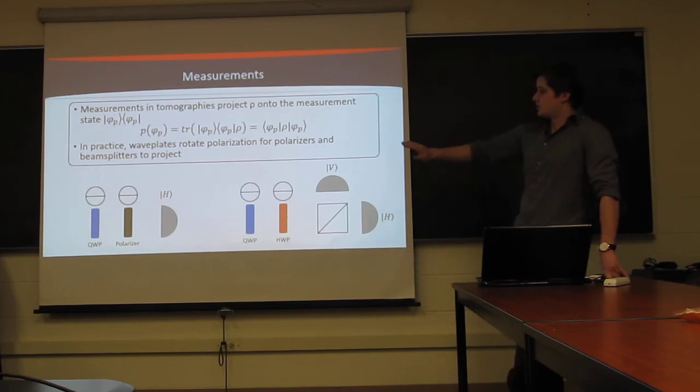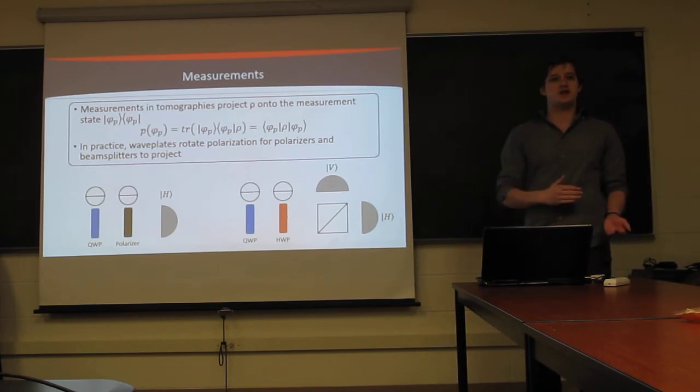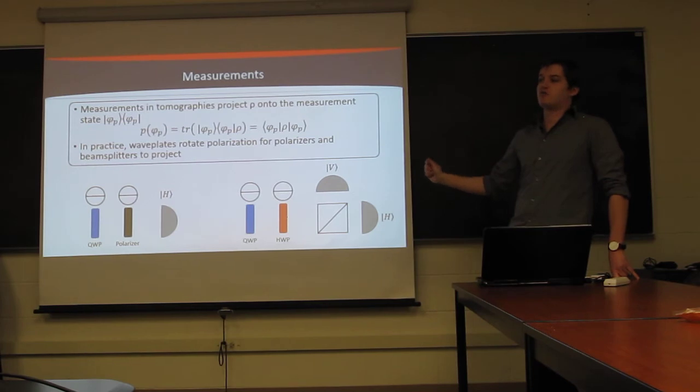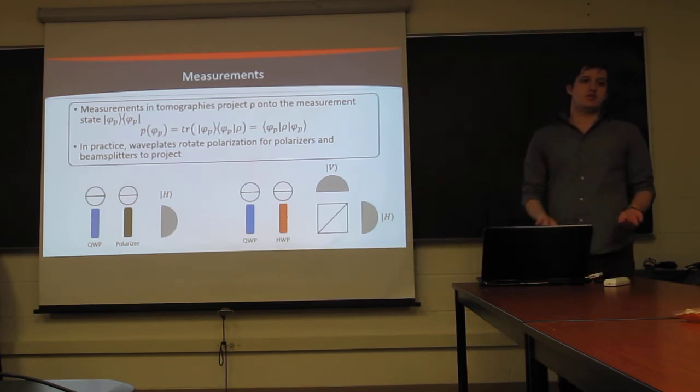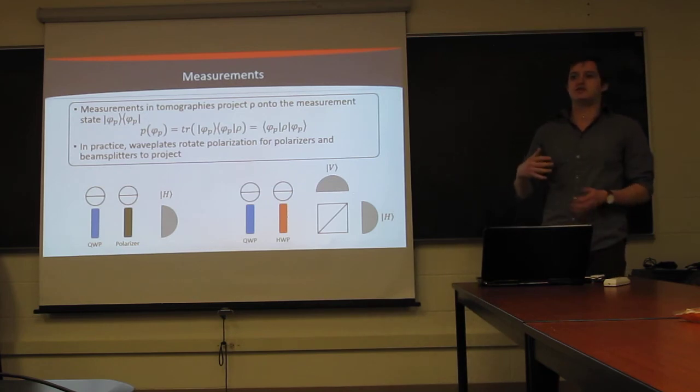In practice, there are two methodologies to go about this. You can either use a quarter wave plate and a polarizer, in which case the quarter wave plate allows you to rotate any polarization state onto a linear polarization state, and then the polarizer projects onto the desired linear polarization state. Or, you can alternatively use a quarter wave plate, half wave plate, and polarizing beam splitter. This accomplishes a similar goal, in which the quarter wave plate and half wave plate are used to rotate your desired state onto horizontal, and then the polarizing beam splitter transmits the desired projection state and reflects the orthogonal state. The advantage of this setup is that you can measure both the orthogonal state and the desired state at the same time, saving you measurements. But, it's a little bit more complicated to set up, since you have to couple in two detectors.